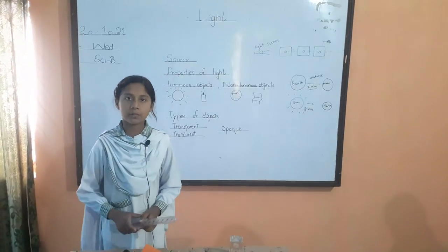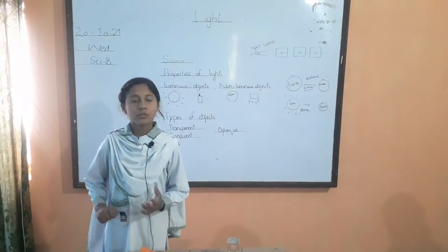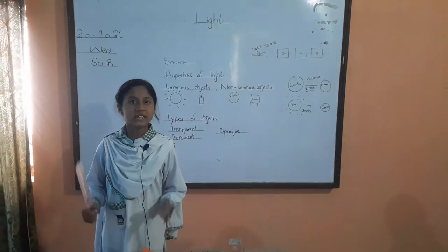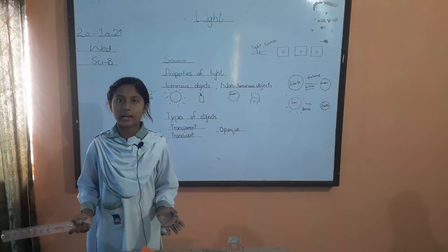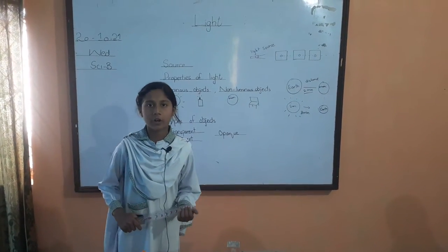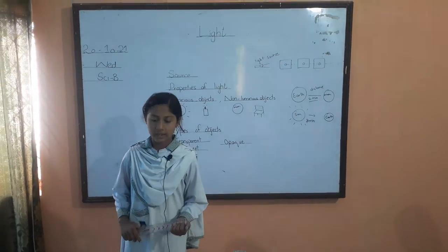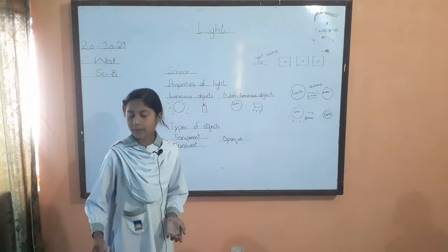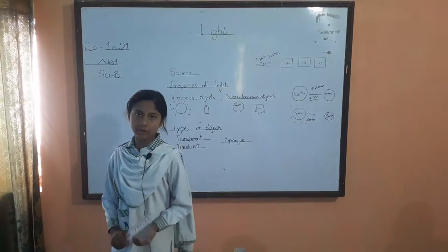Non-luminous objects. Those objects which do not have their own light are called non-luminous objects. Light travels onto non-luminous objects.